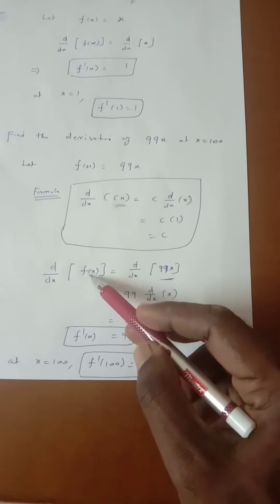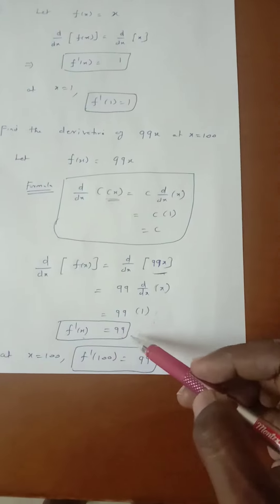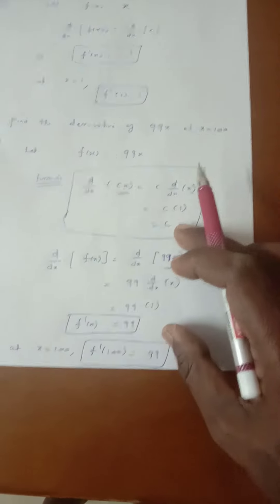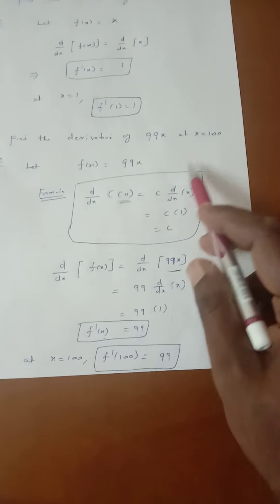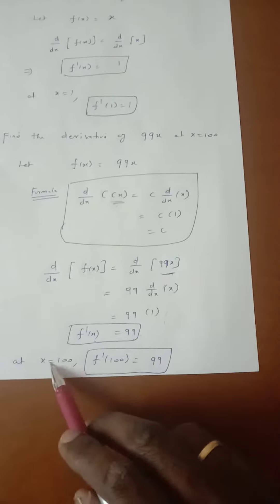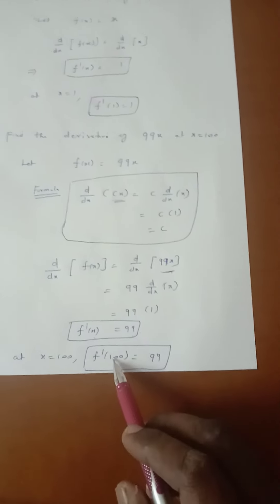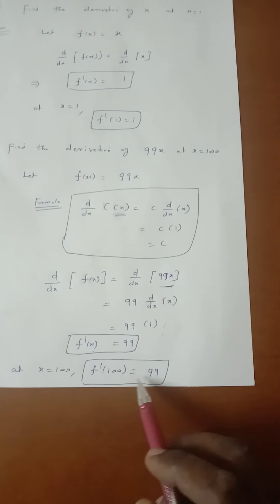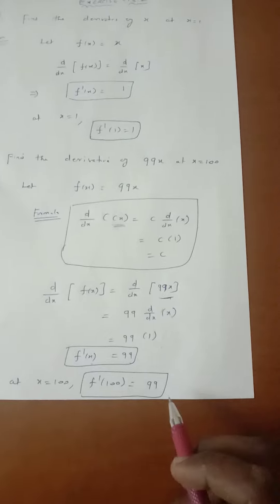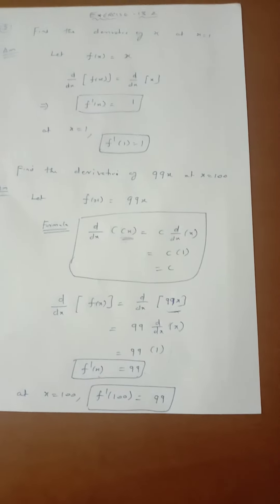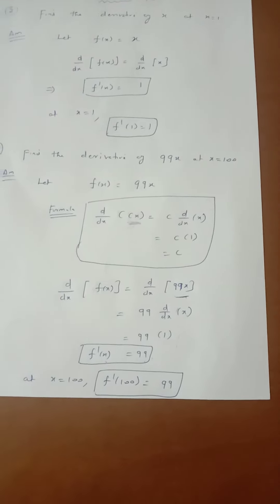So d by dx of f of x, that is f dash of x, equals 99. At the point x equal to 100, replacing x by 100, f dash of 100 equals 99. This is the final answer.